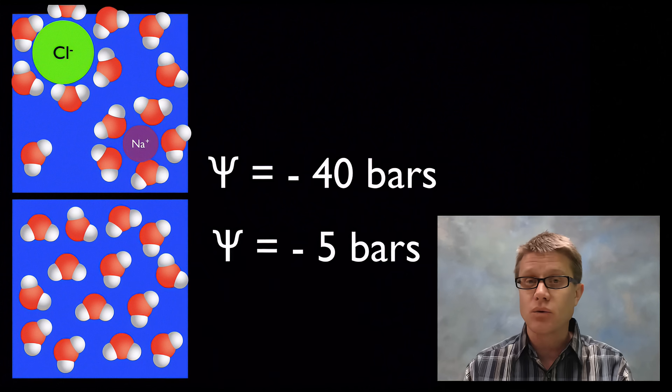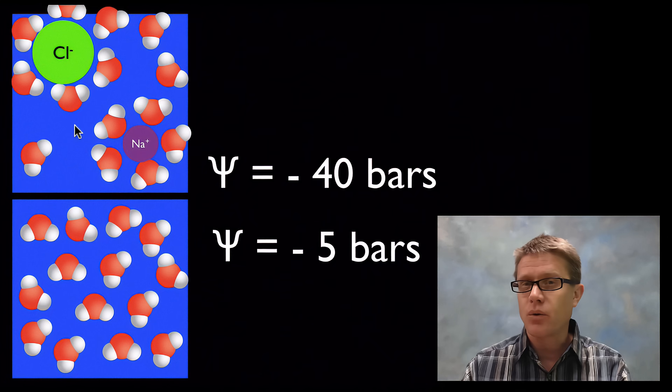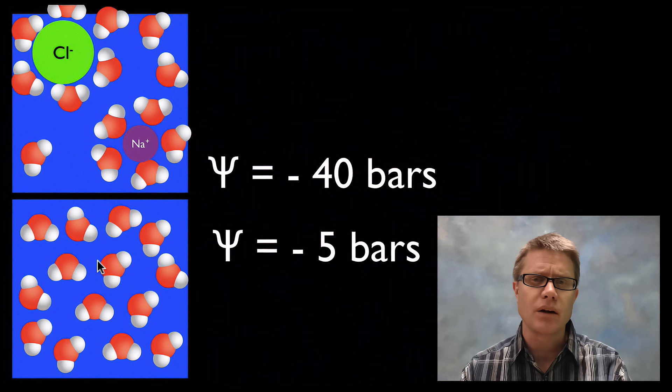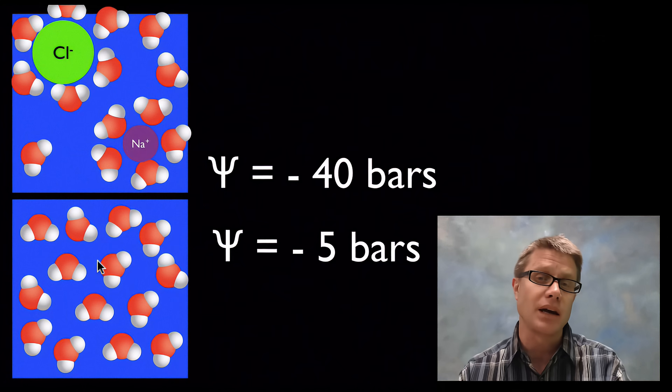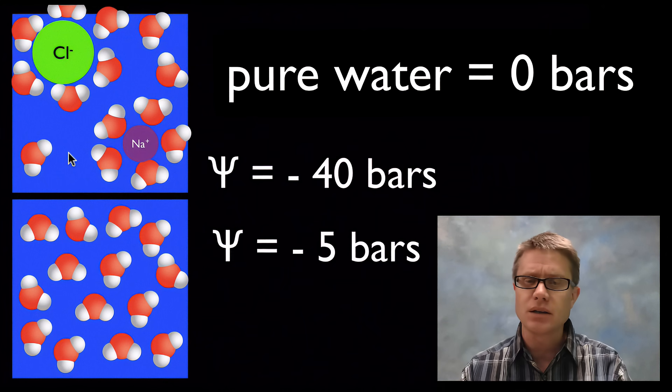We measure water potential on either side of that membrane. On the outside it's going to be negative 40 bars, and on the inside it's going to be negative 5 bars. Pure water is going to be right at 0 bars of water potential.